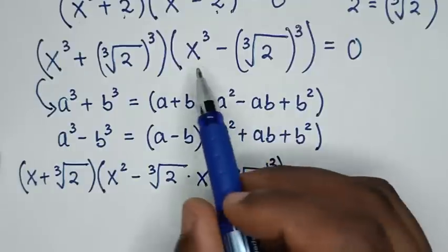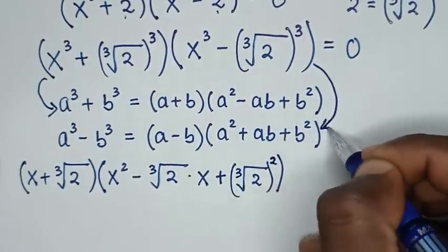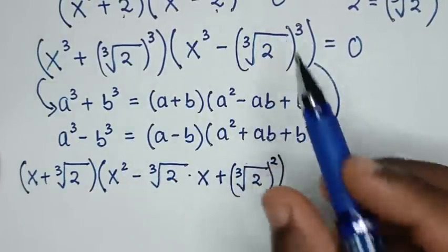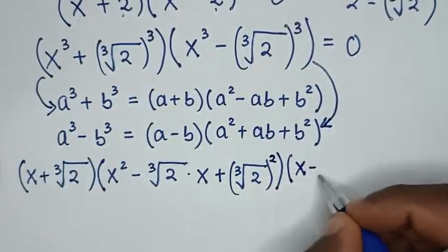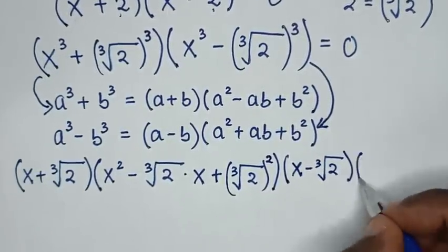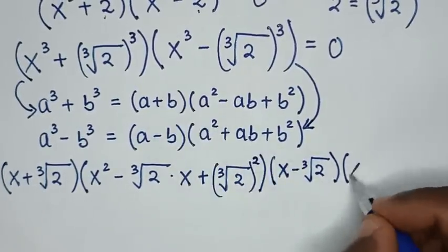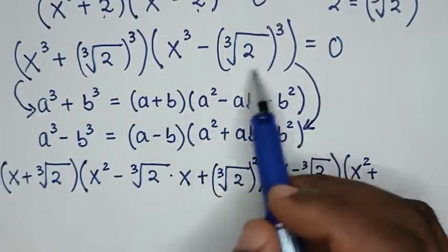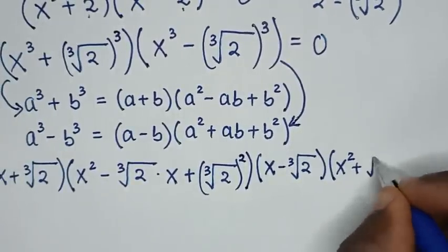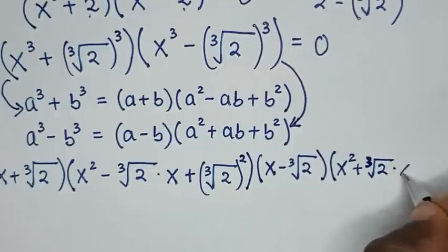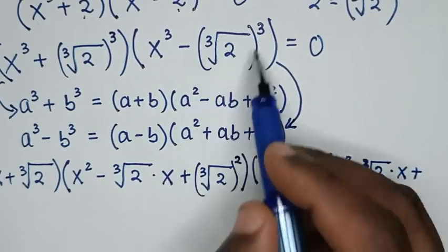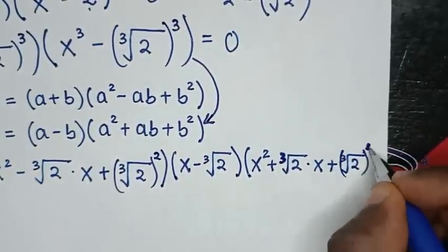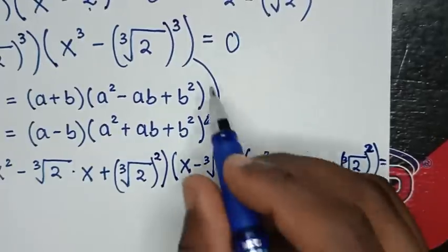Then, from the second part here, we will use the difference of cubes rule in this form. So a minus b gives x minus ∛2. Here the bracket is (x − ∛2), then times the second factor: a² gives x², then plus ab gives plus ∛2 times x, then plus b² gives (∛2)², then bracket is equal to 0.